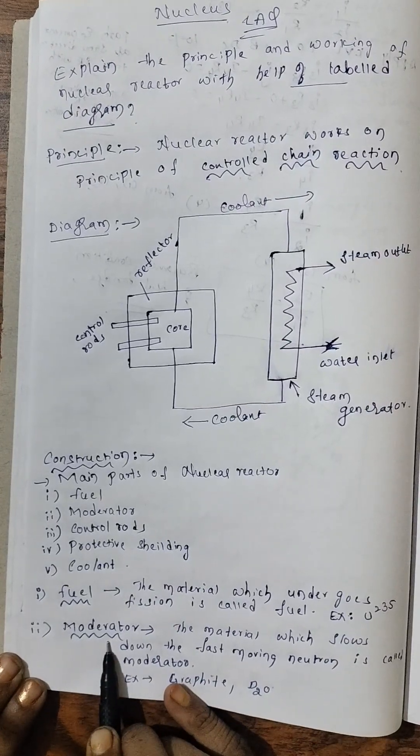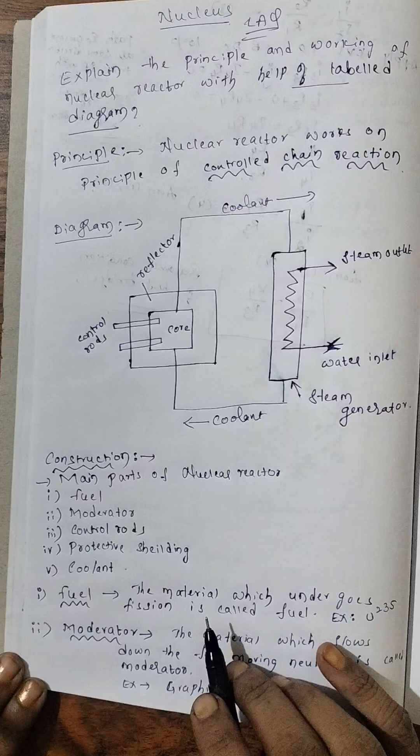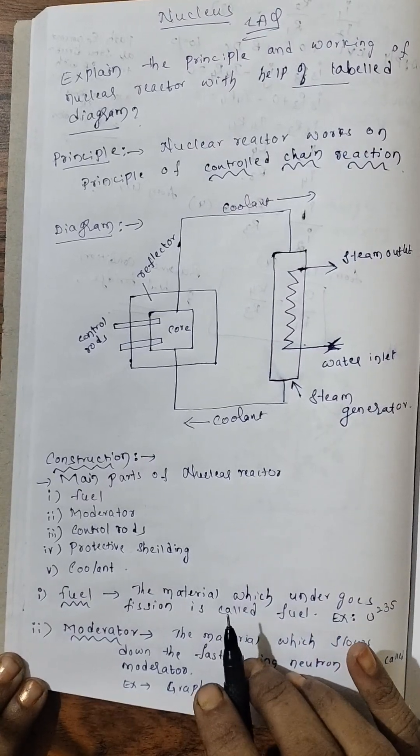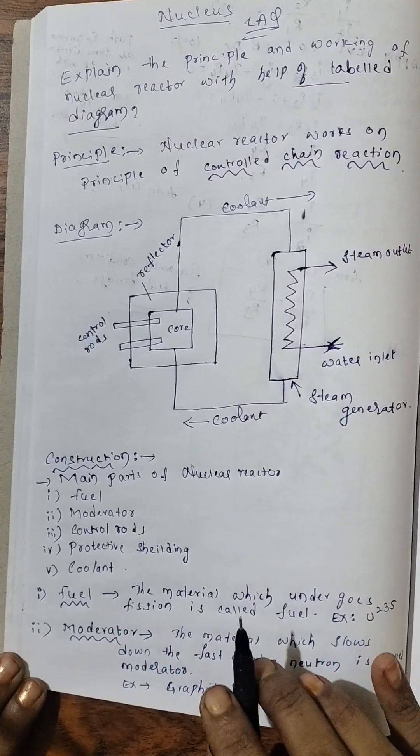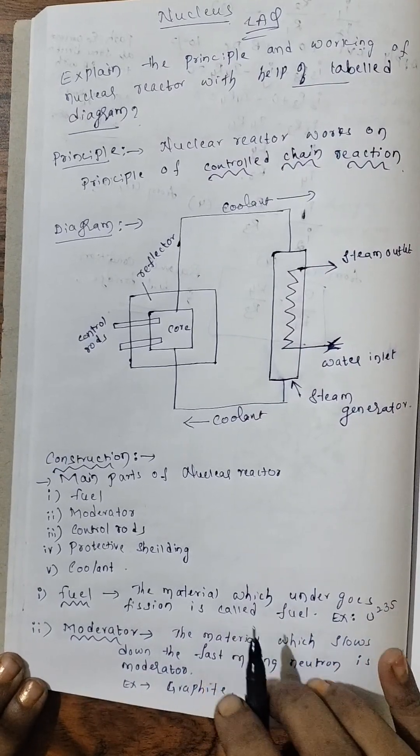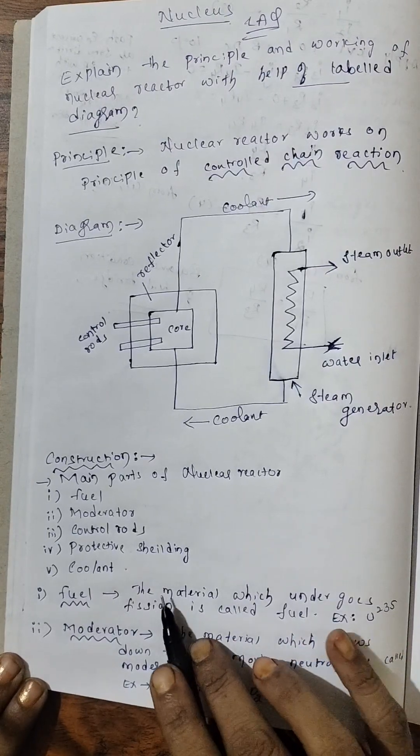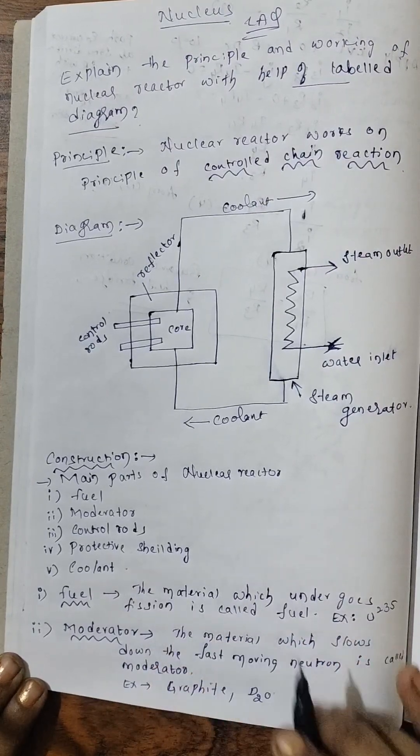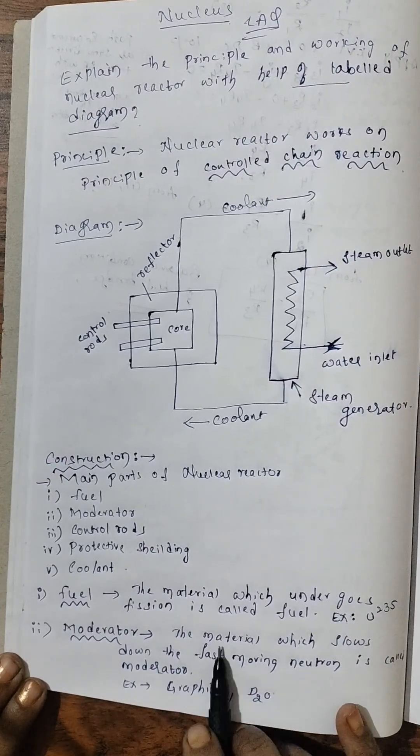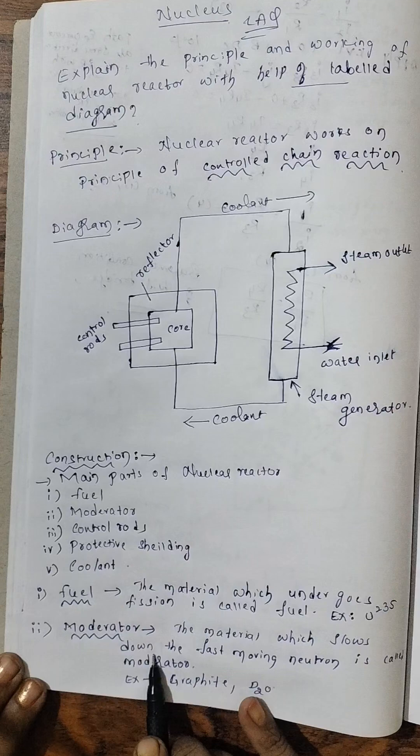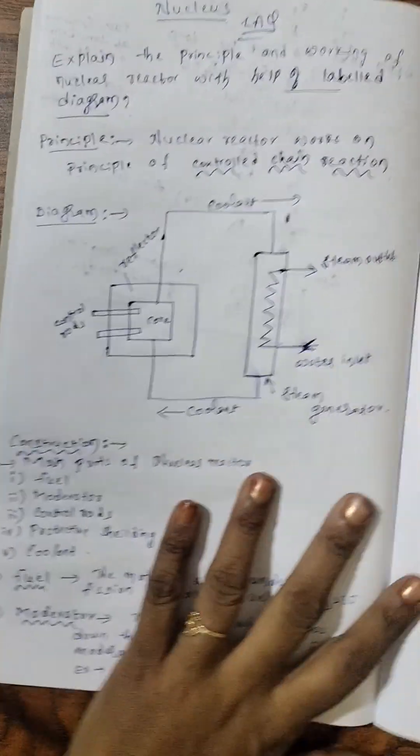Next, moderator. During fission process, neutrons are released. That neutrons will have very high speed. So in order to control that speed or in order to slow down the speed of neutrons, moderator is used. So as moderator, graphite or D2O is used. So material which slows down the fast moving neutrons is called moderator.